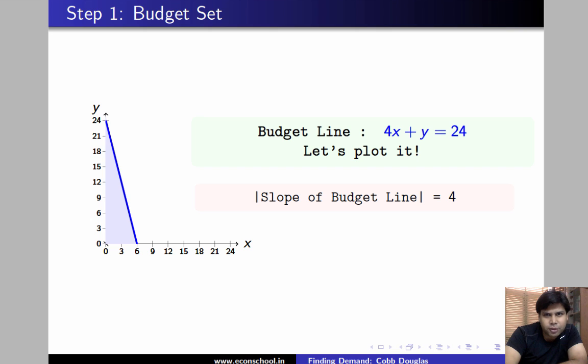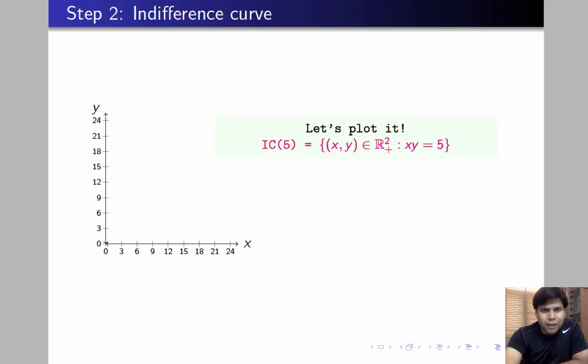The next step will be to plot the indifference curves. Let's plot IC for some arbitrary satisfaction level, let's say u equal to 5 first. IC for u equal to 5 is all those (x,y) that satisfy the condition that x times y equals 5. All you need to do is plot y equal to 5 by x.